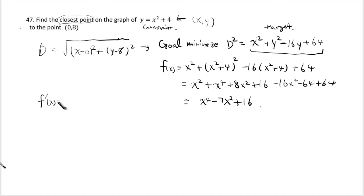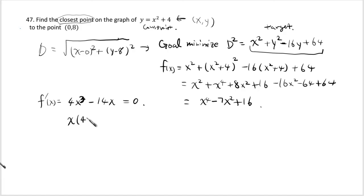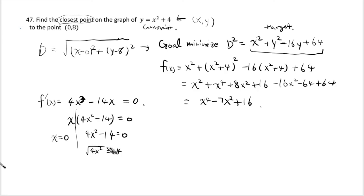Differentiate: f'(x) = 4x³ − 14x. Set equal to 0 and factor: x(4x² − 14) = 0. So x = 0 or 4x² = 14, giving x² = 14/4, so x = ±√14/2.